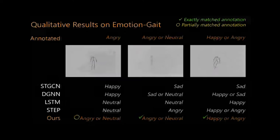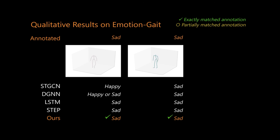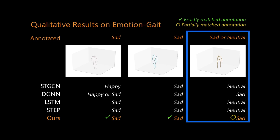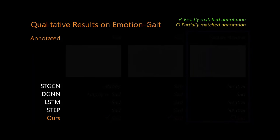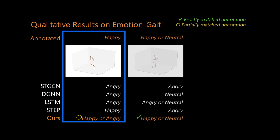We also show a few scenarios where the emotion classes predicted by our method partially matches the annotated classes. This occurs due to the similarity in the affective features in some of the class instances. For example, in this case, the slow pace of the gait makes the network think that the gait is only sad, while in this case, the exaggerated limb movements confuse the network into thinking that the gait could be either happy or angry.